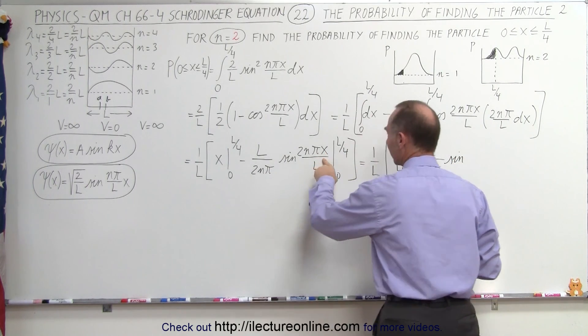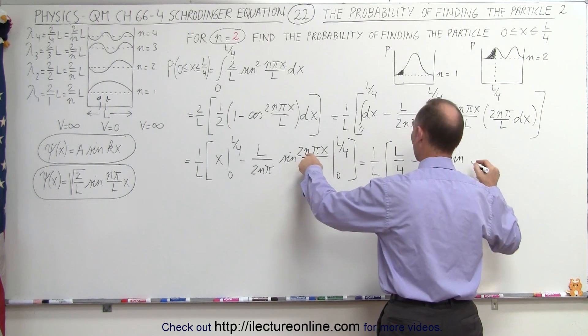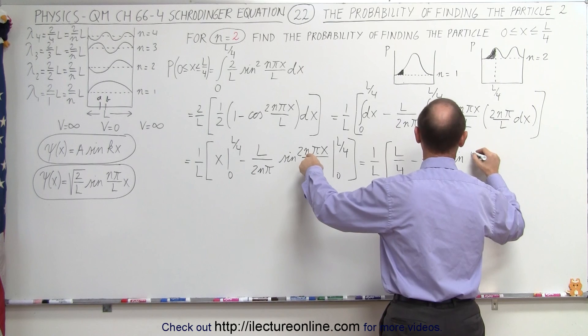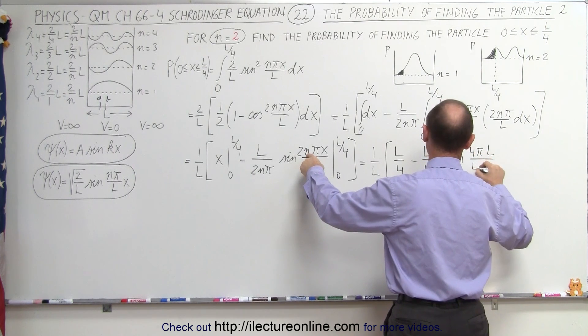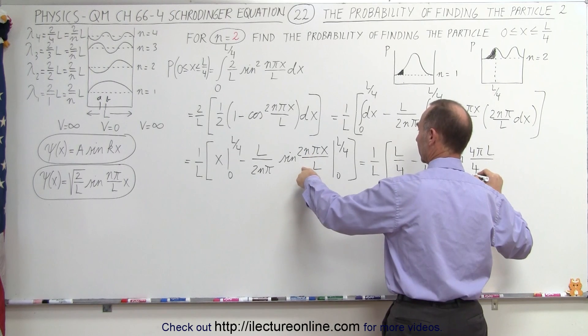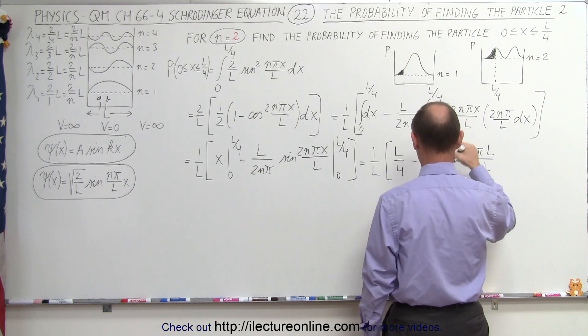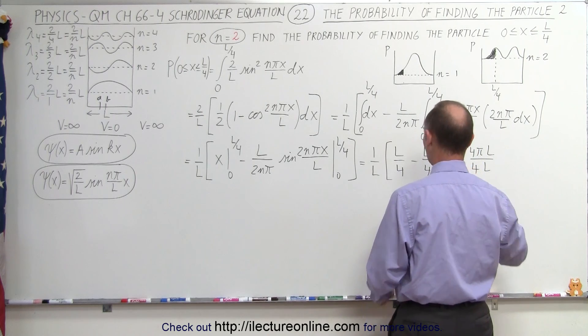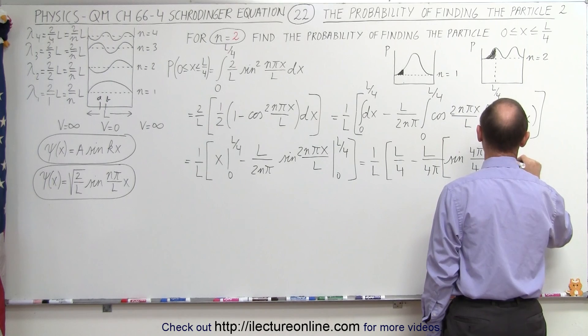when we plug in the upper limit, we get L over 4, but remember this is 2, so we get 2 times 2, which is 4 pi L over 4 times L. And then when we, let's see here, I'm going to need another bracket, because then I have to subtract when I plug in the lower limit, so minus the sine of 0.